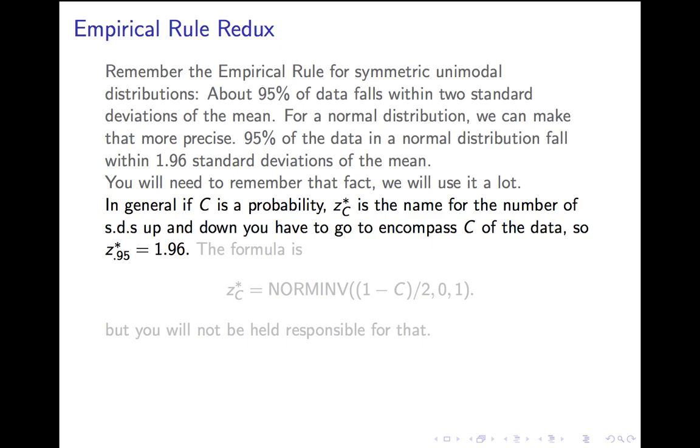You can ask that about anything. Instead of 95%, you could ask 99% or 90%, and in general, the answer to that question, how far, how many standard deviations up and down do you have to go to get c of the data, is the number called z* c. So, z* 0.95 is 1.96.